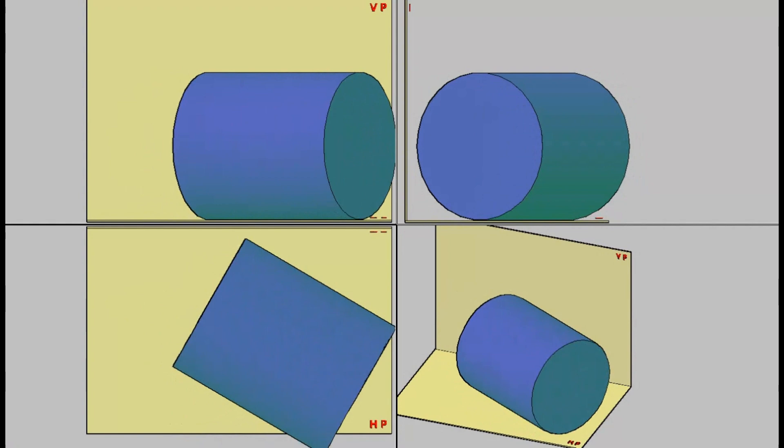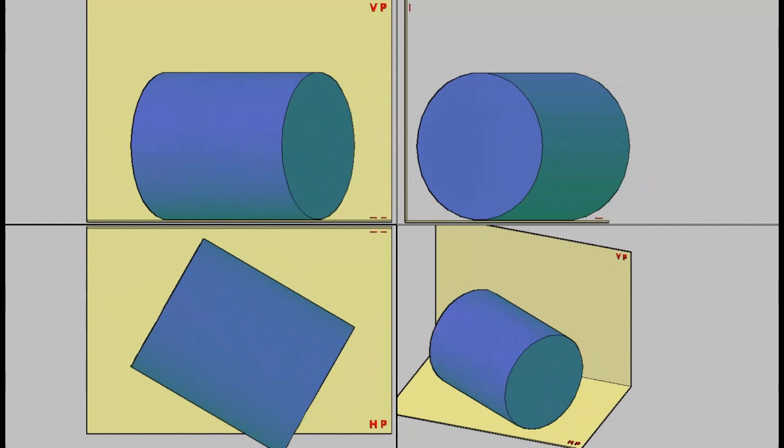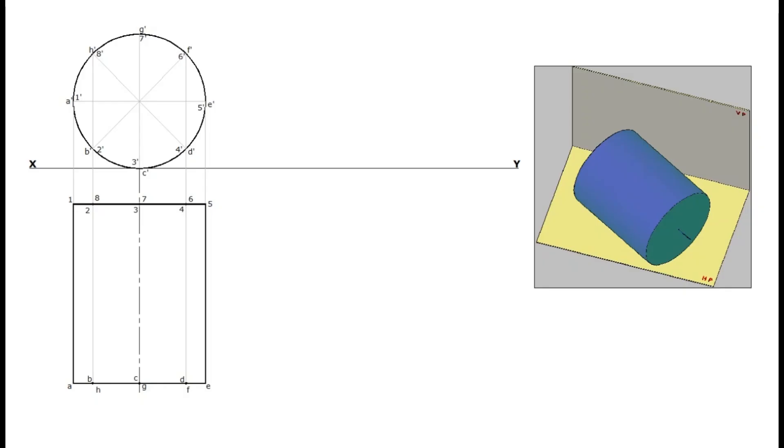When the axis is inclined, the extreme generator will also be inclined. In the second stage top view, draw a 30 degree line. Based on this 30 degree line, reconstruct the rectangle.